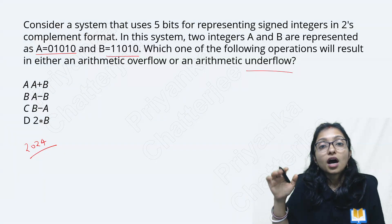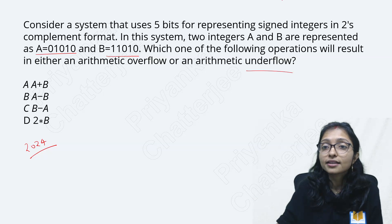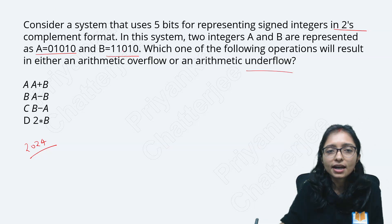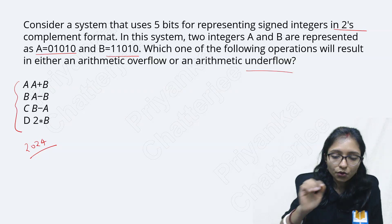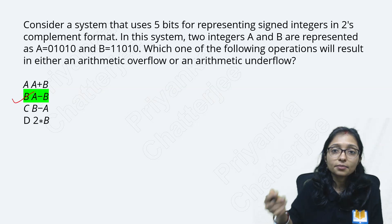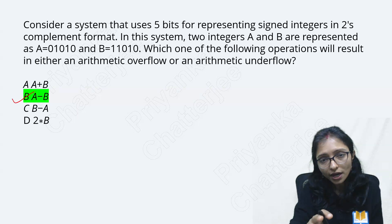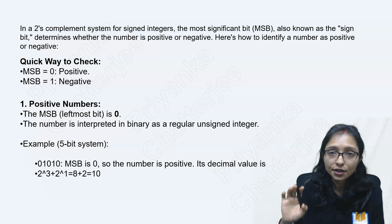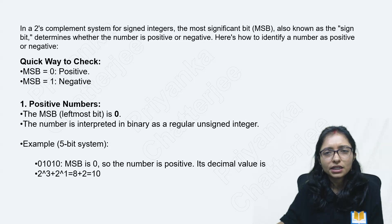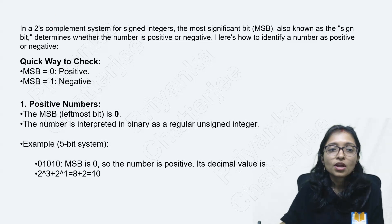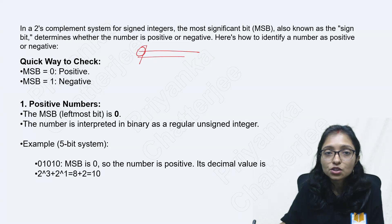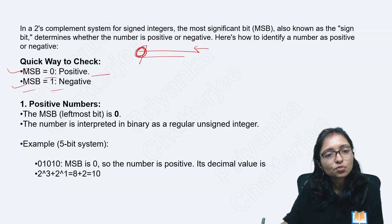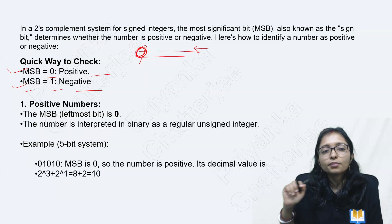We are going directly into number system — how to handle overflow and underflow, and how to understand two's complement representation for negative and positive numbers. Here a and b are given; we need to find where overflow is happening. First, whatever the bit size — 5-bit, 6-bit, 8-bit — you take the MSB. If MSB is 0, the number is positive; if MSB is 1, the number is negative.